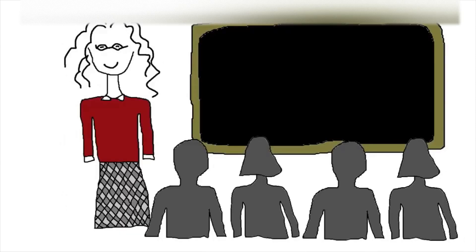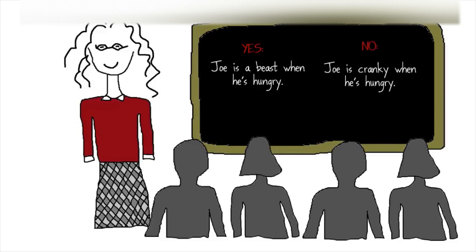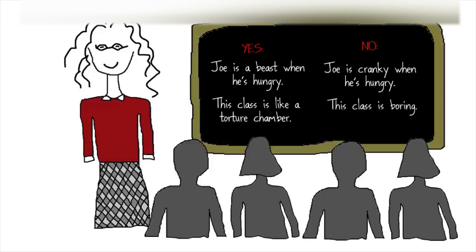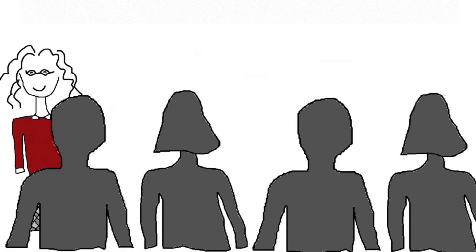Here's a yes example of figurative language: 'Joe is a beast when he's hungry.' And here is a no example: 'Joe is cranky when he's hungry.' It's important that your no examples not be so obvious that they're not taken seriously. Here's another yes example: 'This class is like a torture chamber.' And a no: 'This class is boring.' At this point, students should already be starting to develop a theory about the concept you're presenting. You might ask them to share their thoughts or keep silent.